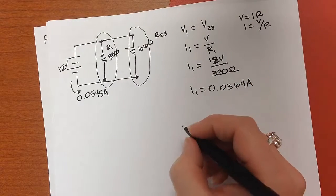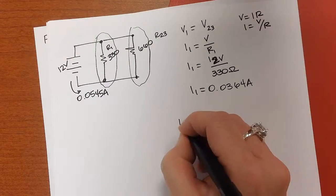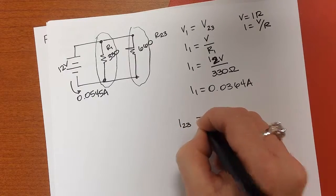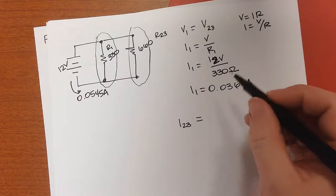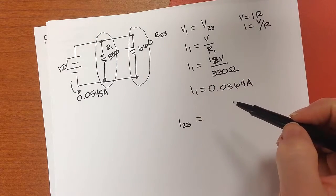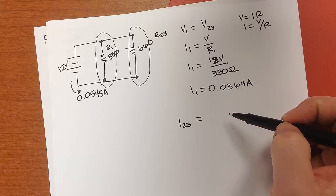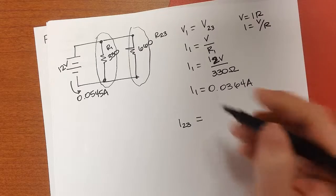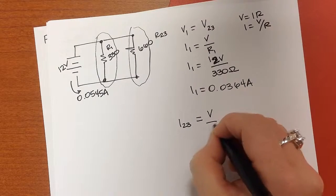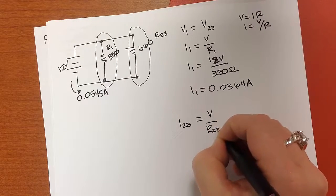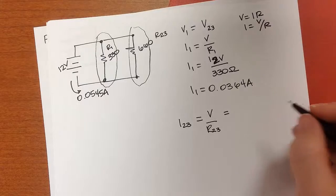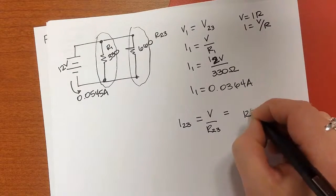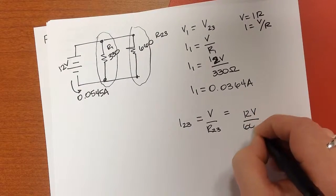So let's try it again with I23. And when we look at I23, it's going to be the voltage drop divided by R23. So the current in that branch, because the resistance is more, we expect the current to be less. So it's 12 volts divided by 660.